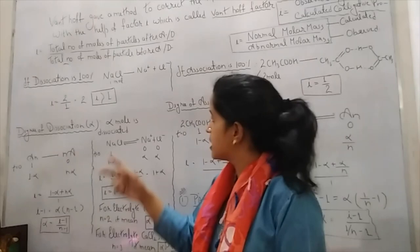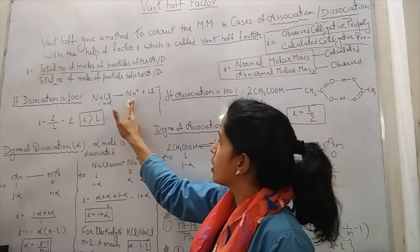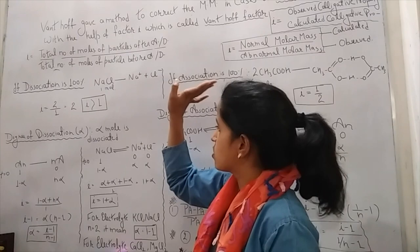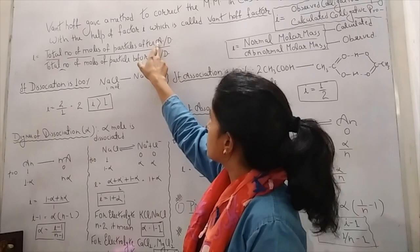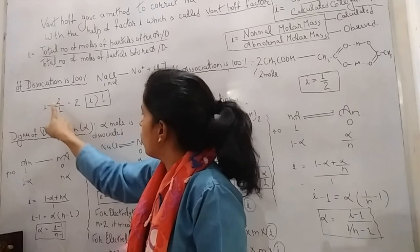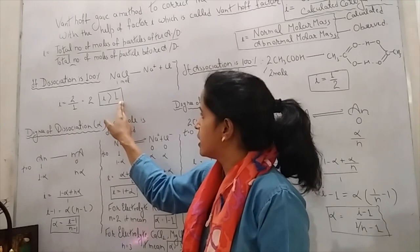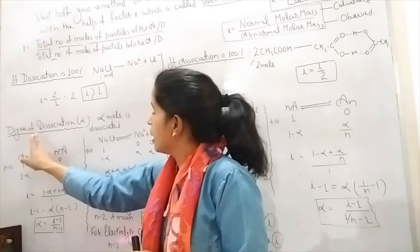First case: if dissociation is 100%. If we have taken one mole of NaCl and it is completely dissociated to give Na⁺ and Cl⁻ — one particle of Na⁺ and one particle of Cl⁻. So i = total moles after dissociation / before = 2/1 = 2. This means i is greater than one in case of dissociation.